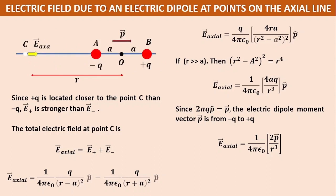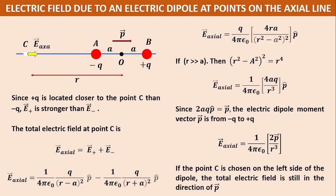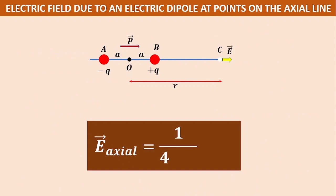Now consider the point C on the side of the minus q charge. In this case, minus q is closer to point C than plus q, so its field at C will be greater, and the resultant field at C will be along the e minus vector side. So once again, e axial is along the direction of p vector. If point C is chosen on the left side of the dipole, the dipole electric field is still in the direction of p vector. The direction of electric field on the axial line is always along p vector. The final derived formula is: e axial vector equals 1 by 4 pi epsilon 0, 2p vector by r cube.